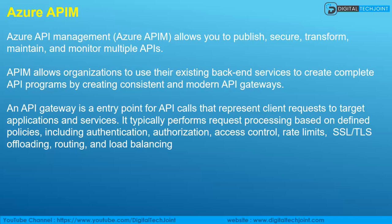It typically performs request processing based on defined policies including authentication, authorization, access control, rate limits, SSL/TLS offloading, routing, and load balancing. Imagine sites like Amazon — just think how many APIs they must be managing. In order to manage these APIs, we need an API gateway, otherwise it would be very difficult for anyone to manage hundreds and thousands of APIs.